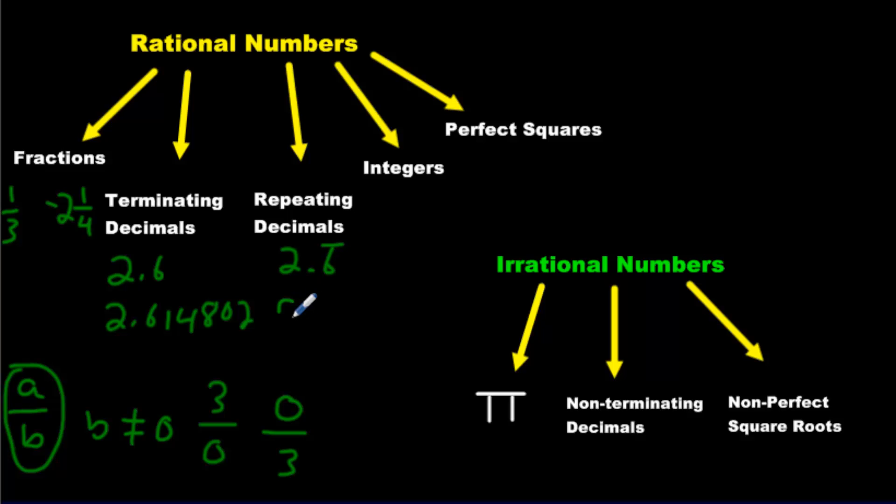Likewise, if I said 0.34 with a line over both, that 3.4 will repeat for all of eternity. Even so, it's a rational expression. That's just 34 over 99. Most repeating decimals are always going to be over a 9 or a 99 and that sort of thing.